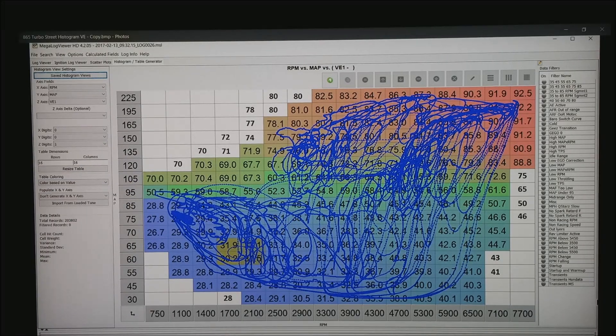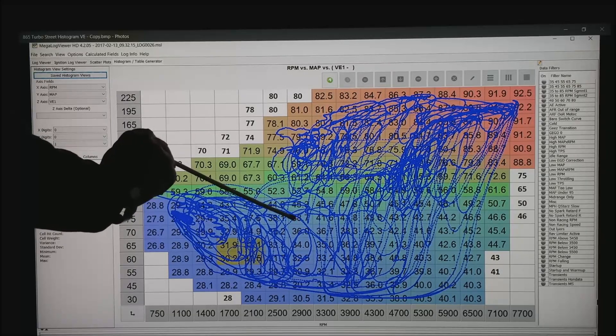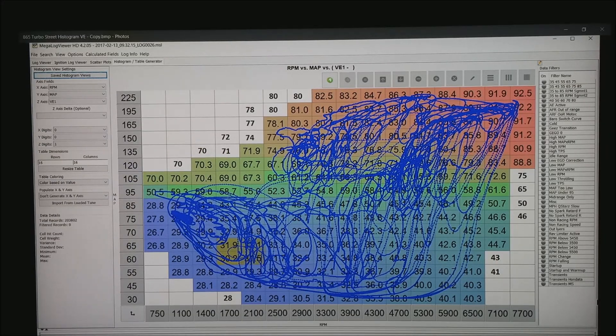In this motor notice that we jump from 38 on a VE up to 61. That's a fairly significant jump in about 30 kPa.